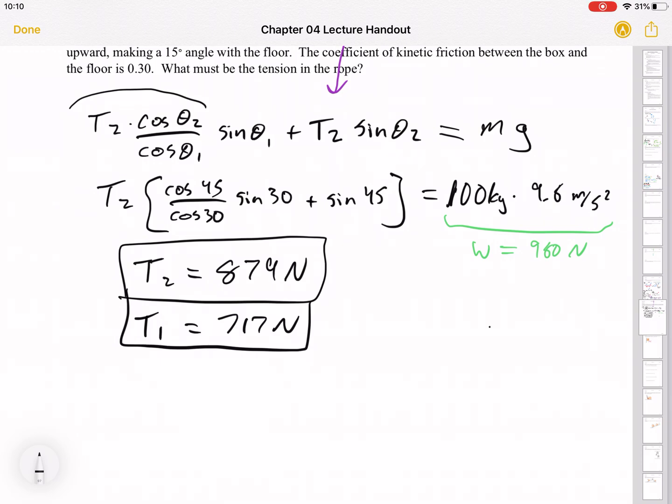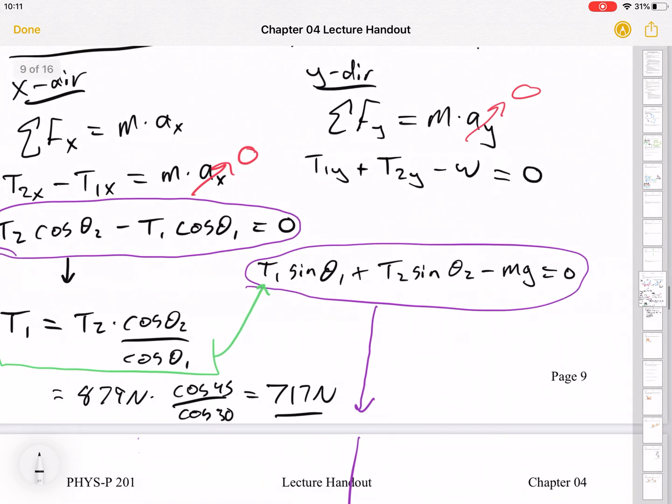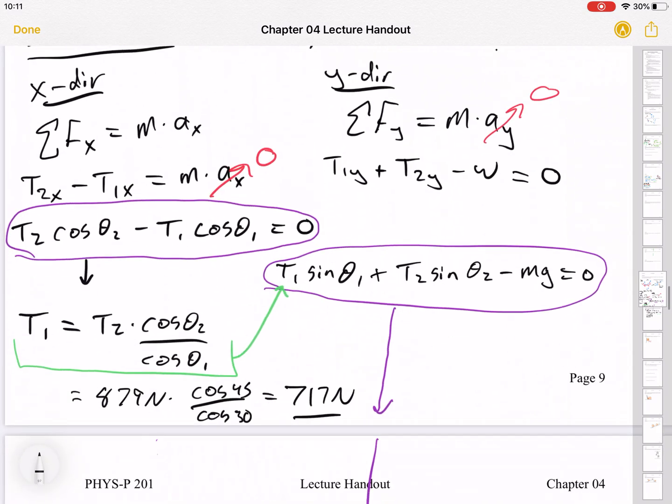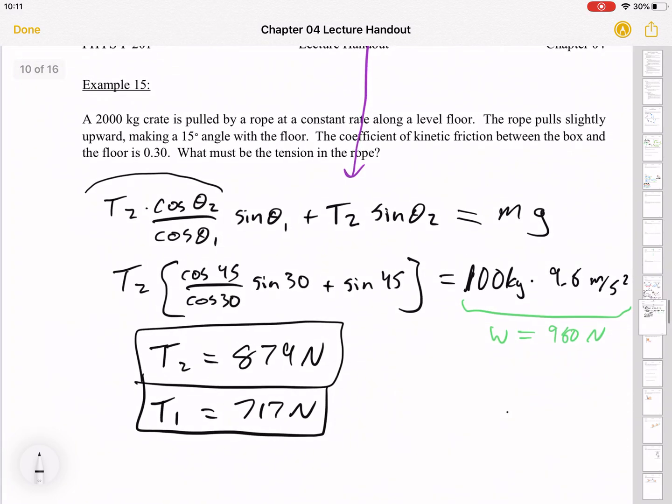So the final step of solving a physics problem is, does the answer make sense? Well, we just said the weight is 980 newtons, and the load is being shared, so both of our tensions are smaller than weight. That makes sense. That tracks with what I expect for this problem. Also I expected T2 to be bigger than T1, and indeed it is.